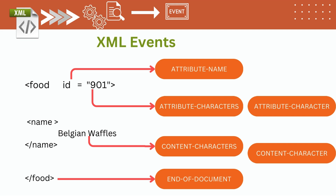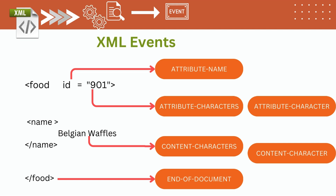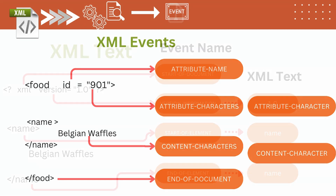If the XML document contains attributes, the attribute name will be associated with the attribute-name event, and its value will be associated with the attribute-characters event. If the attribute value is a single character, then the associated event is attribute-character.